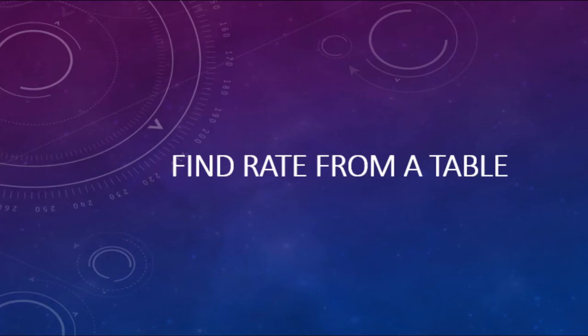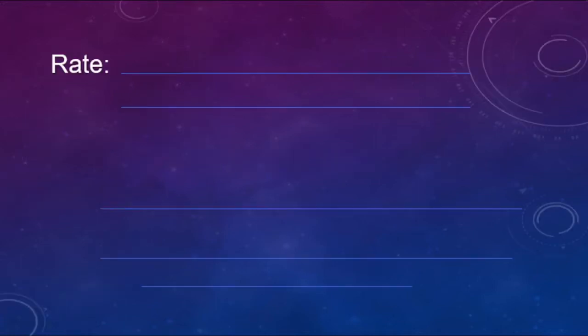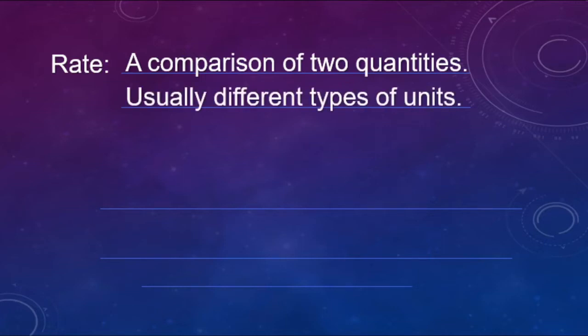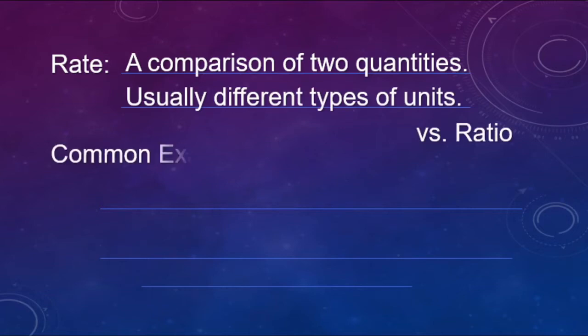For this video we're going to be finding rate from a table, and we're going to sneak in some slope type ideas as well. Rate — definition — it is a comparison of two quantities. These quantities are usually different types of units, compared to ratio where they're normally the same types of units, like length versus length.